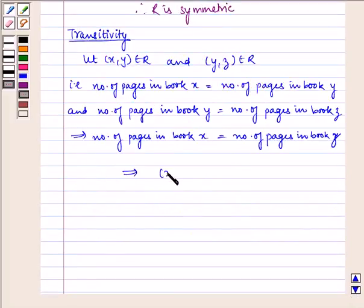Which implies (x,z) belongs to R. Therefore, R is transitive.